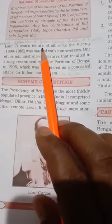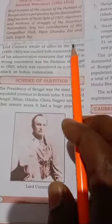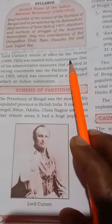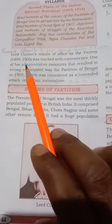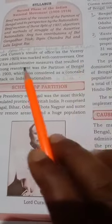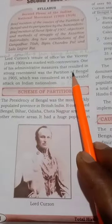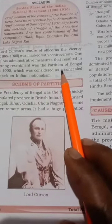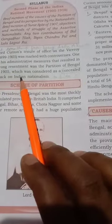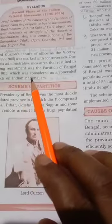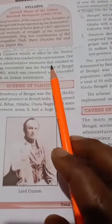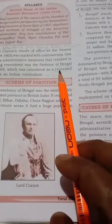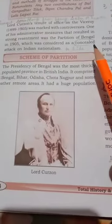Lord Curzon's tenure of office as the Viceroy, from 1899 to 1905, was marked with controversies. One of his administrative measures that resulted in strong resentment was the partition of Bengal in 1905, which was considered as a concealed attack on Indian nationalism - meaning an unseen, hidden attack that was planned with deliberate intent.